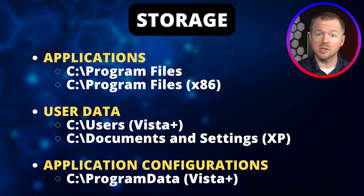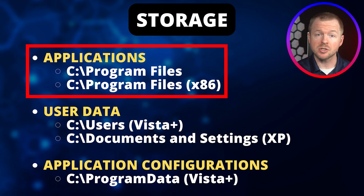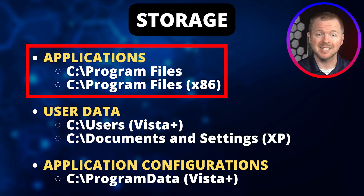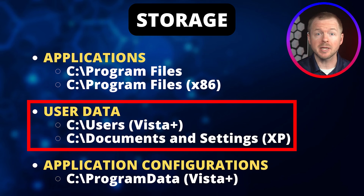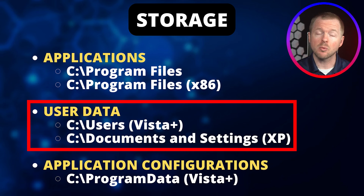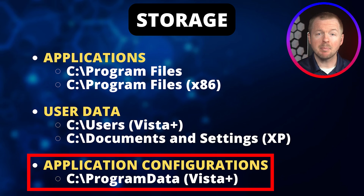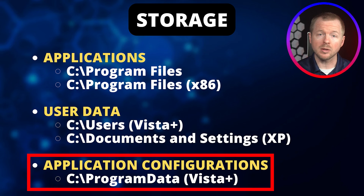On the screen, I've listed several common storage locations in the Windows operating system. Applications are stored in the Program Files directory, and if you have a 64-bit system with 32-bit applications, you'll also have the x86 folder. User data is stored in either the Users directory for Windows Vista or newer, or in Documents and Settings for Windows XP and older. Application configurations are stored in the ProgramData directory in Windows Vista or later, and this directory is hidden.